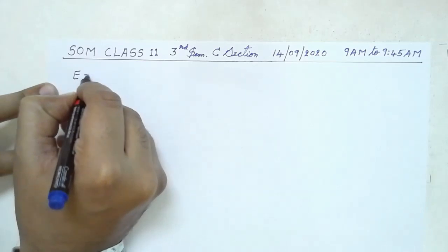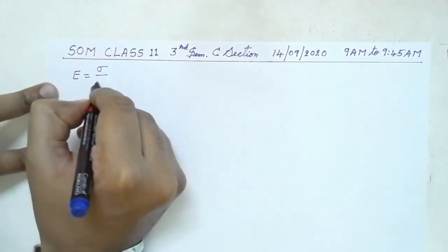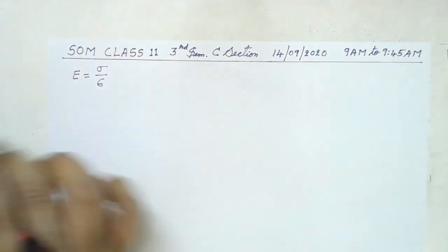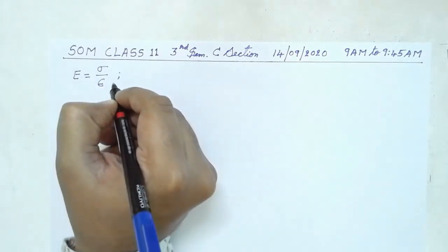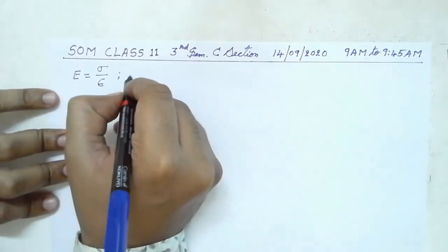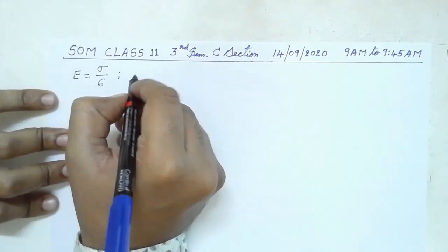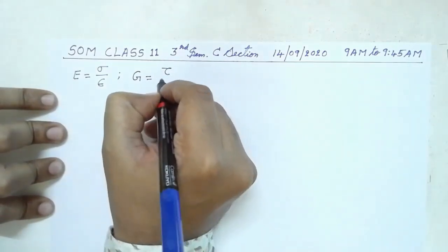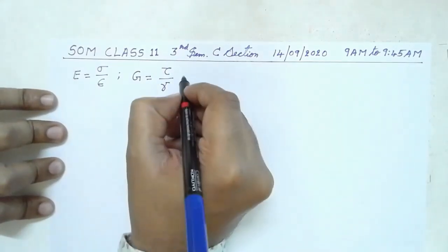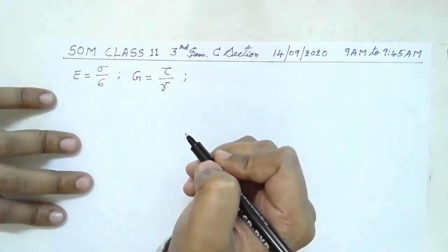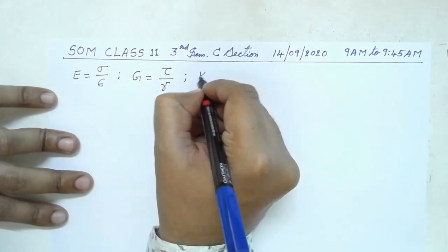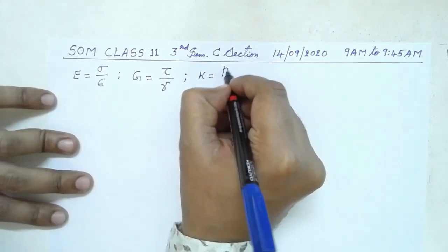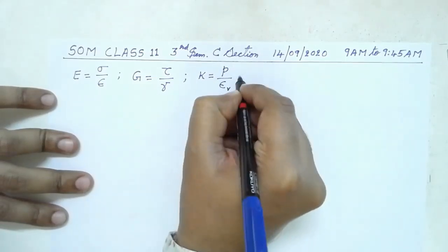we know that Young's modulus, or modulus of elasticity, is equal to normal stress by normal strain. And if there is a body subjected to shear force, then that constant is known as modulus of rigidity or shear modulus, equal to shear stress by shear strain. If the body is subjected to hydrostatic pressure causing volumetric strain,